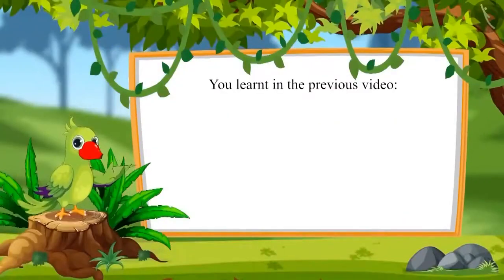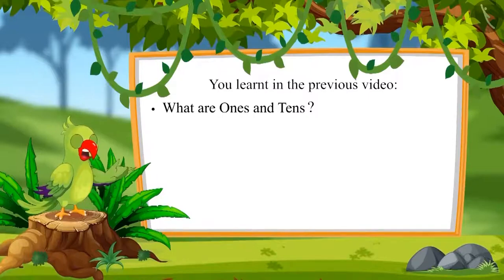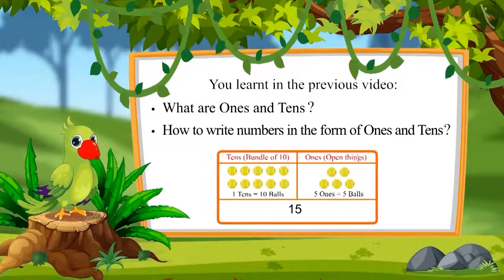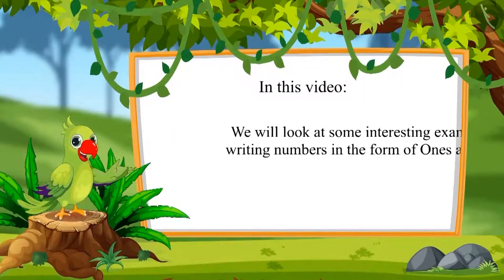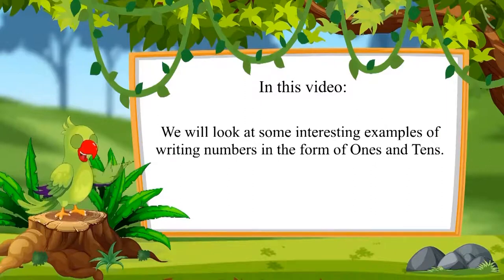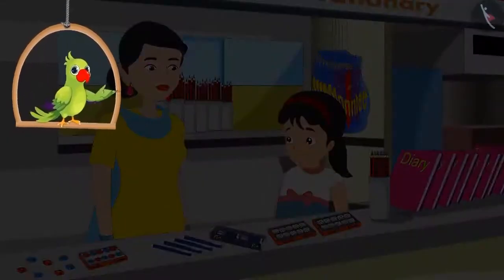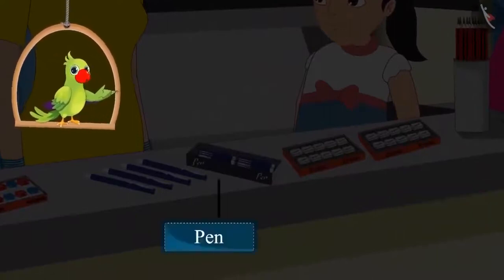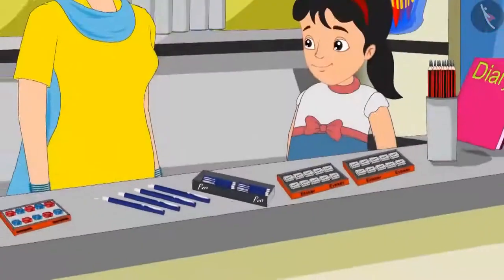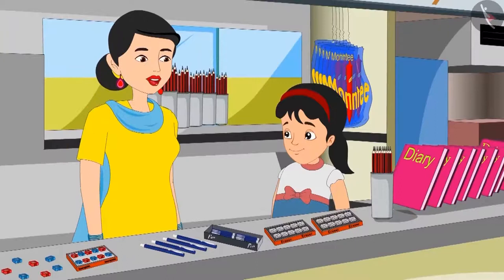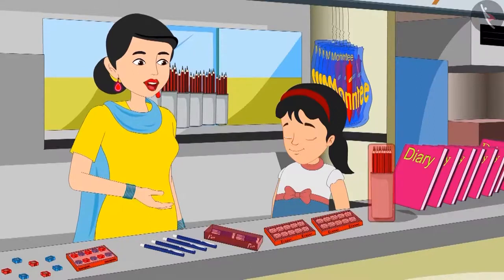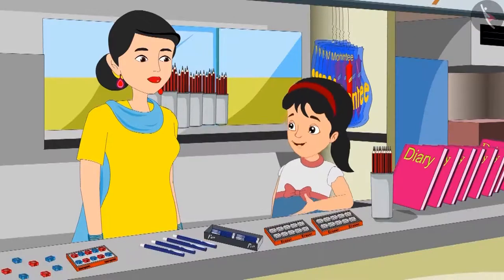So, children, in the previous video, you learned what are 1s and 10s and how to write numbers in the form of 1s and 10s. In this video, we will look at some more interesting examples. Today is a school holiday and Pinky has come to her mother's stationery shop. New goods have come to the shop today. There are so many pencils, pens, sharpeners and erasers. Pinky, whatever new stuff has come, can you please count and tell me the number of all the things? Each packet will have 10 things and other items would be kept open in the box. Okay, mom.